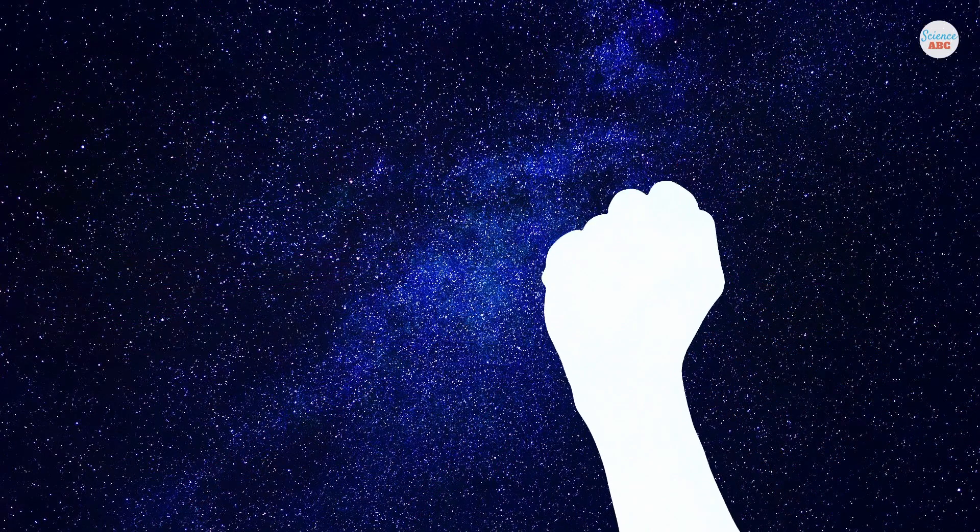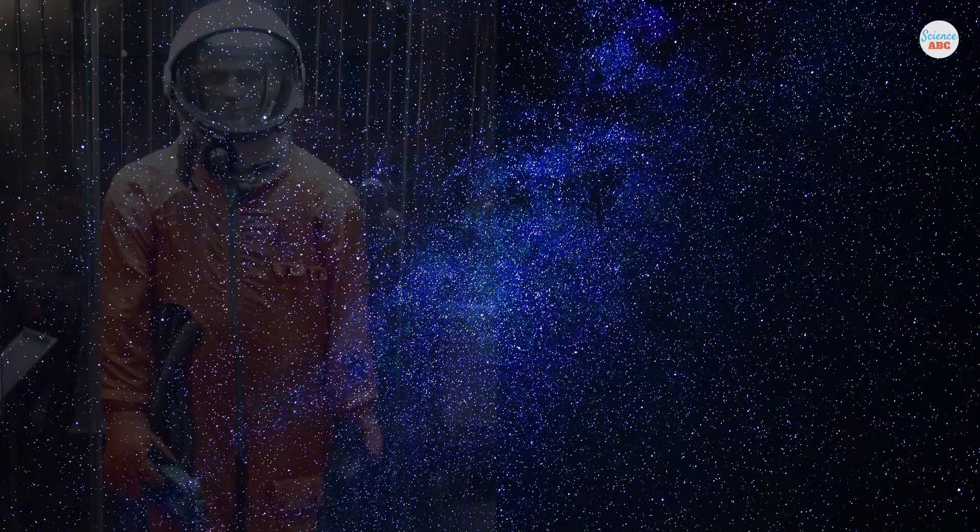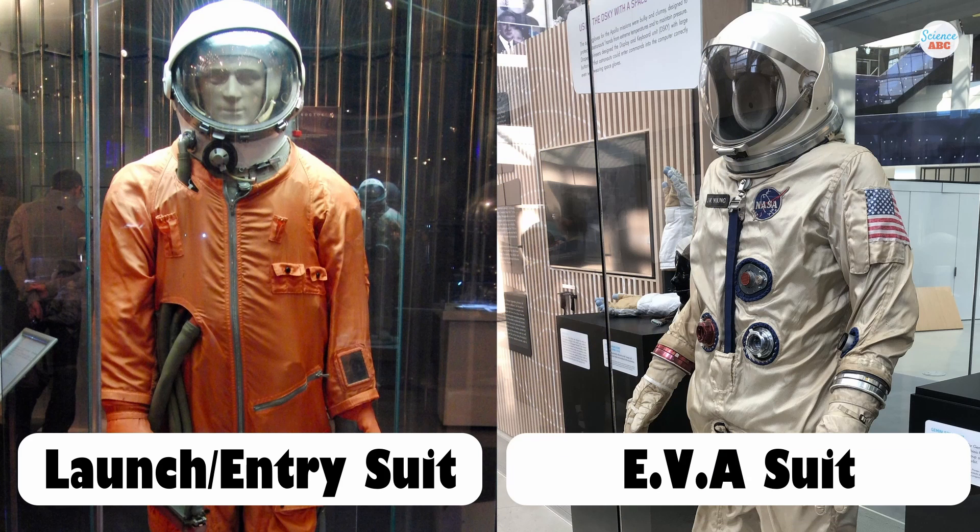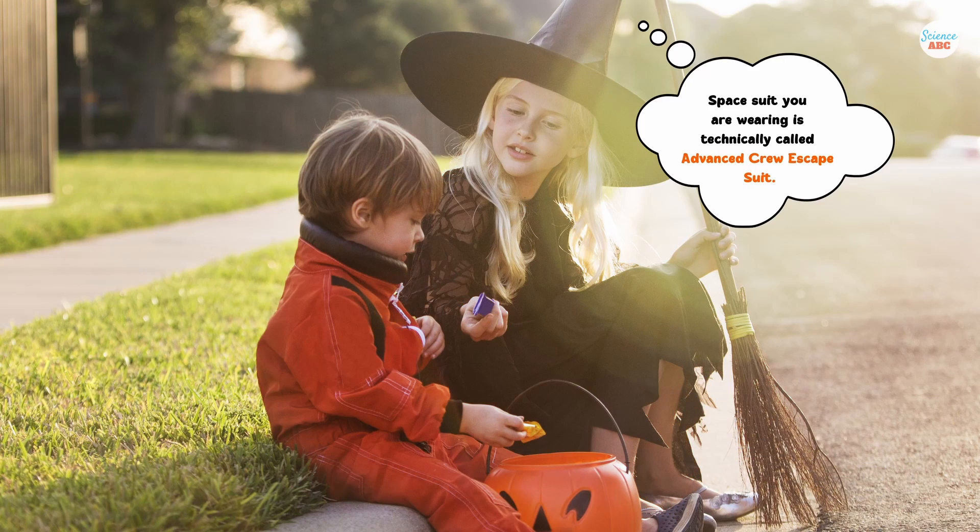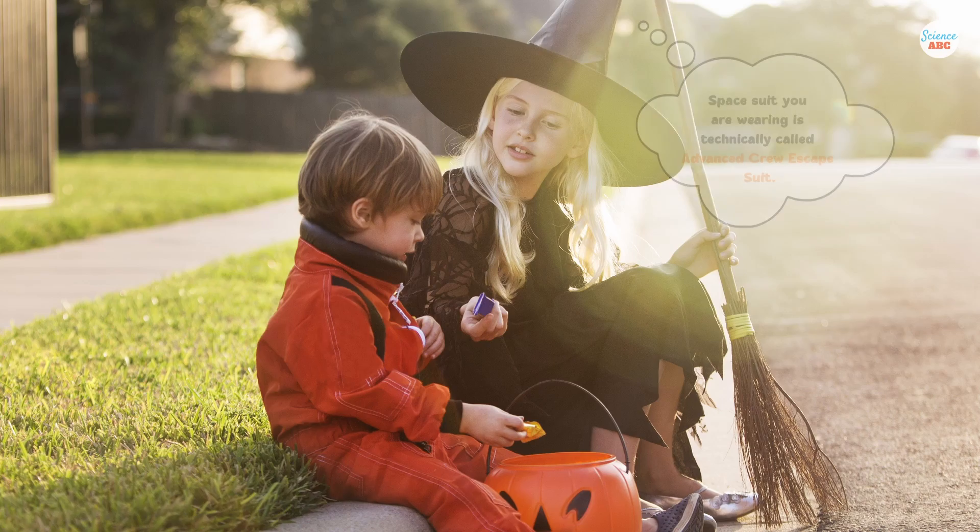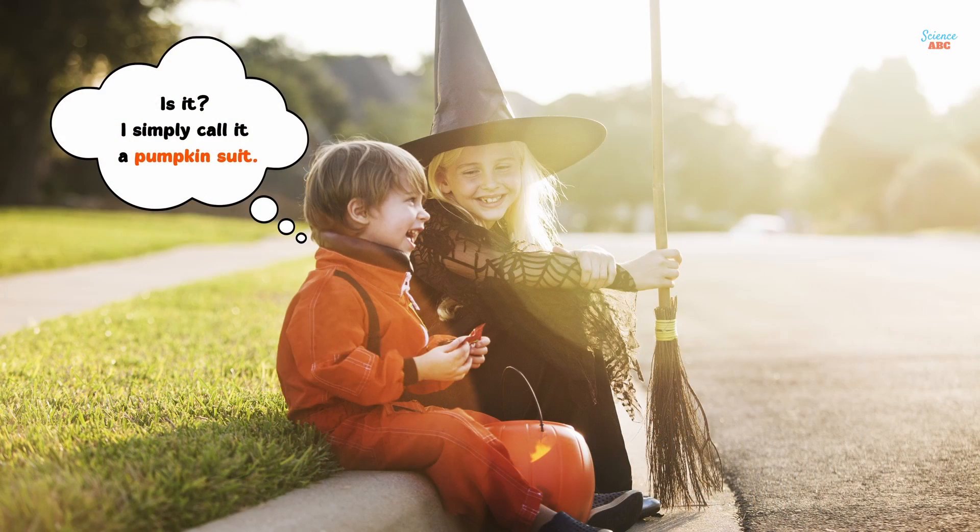To start with, there are two main kinds of spacesuits: launch and entry suits, and EVA suits. The launch or re-entry suit is easier to refer to as the orange suit, although there is a specific name for this type of suit, the advanced crew escape suit. It is also informally referred to as the pumpkin suit.